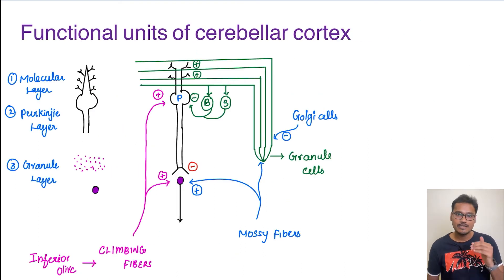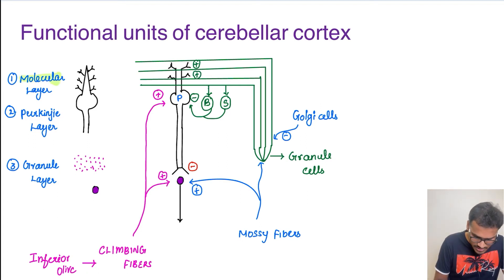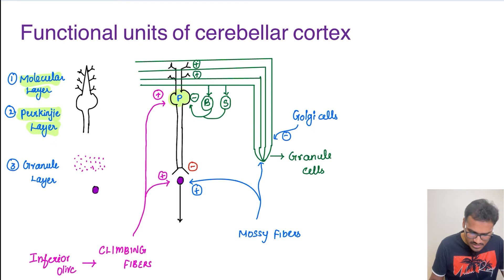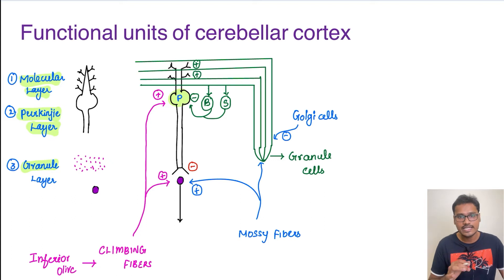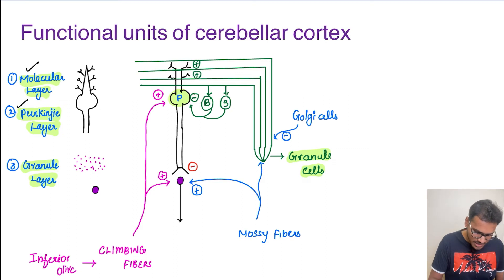Coming to the functional unit of the cerebellar cortex — there are several layers, and the three most important are: the molecular layer, the Purkinje layer — so named because the cell bodies of the Purkinje cells are present here — and the granular layer, which has granule cells that are granular in appearance. So the three layers of the cerebellum are the molecular layer, Purkinje layer, and granule layer.